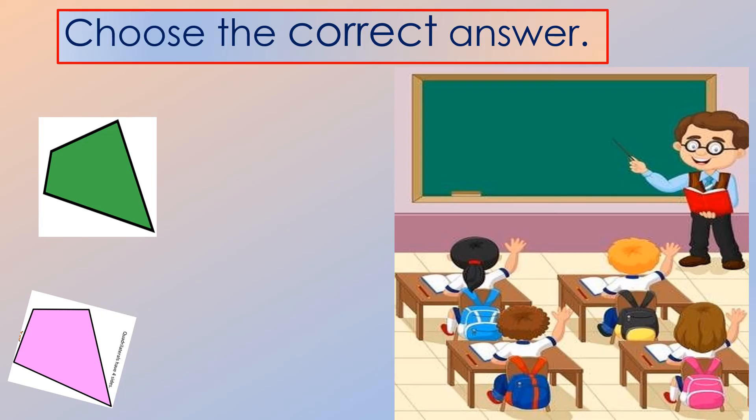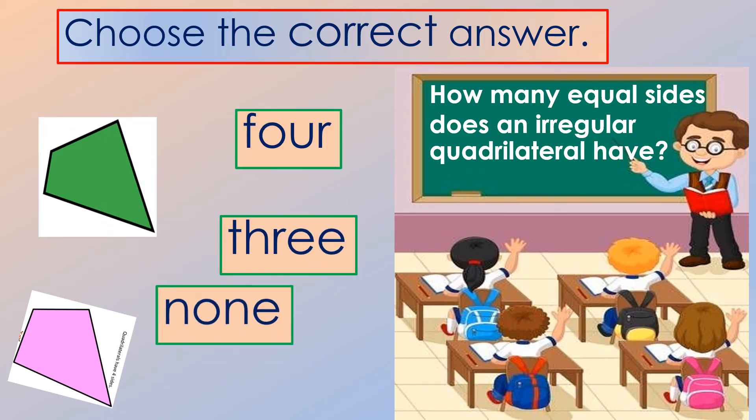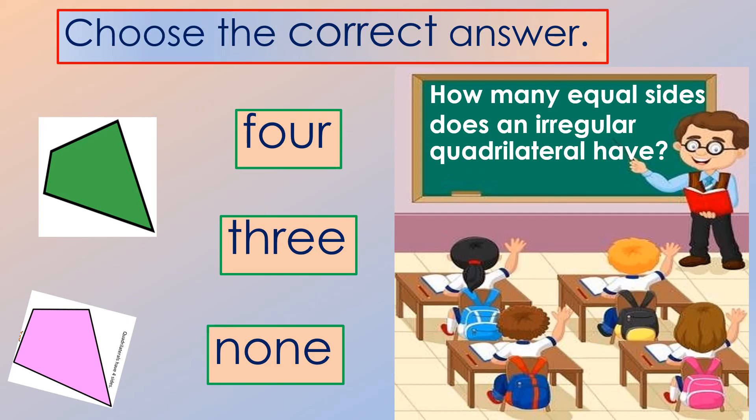What about this question? How many equal sides does an irregular quadrilateral have? Is it four, three, or none? What do you think? Correct answer is none. In an irregular quadrilateral, no sides are equal.